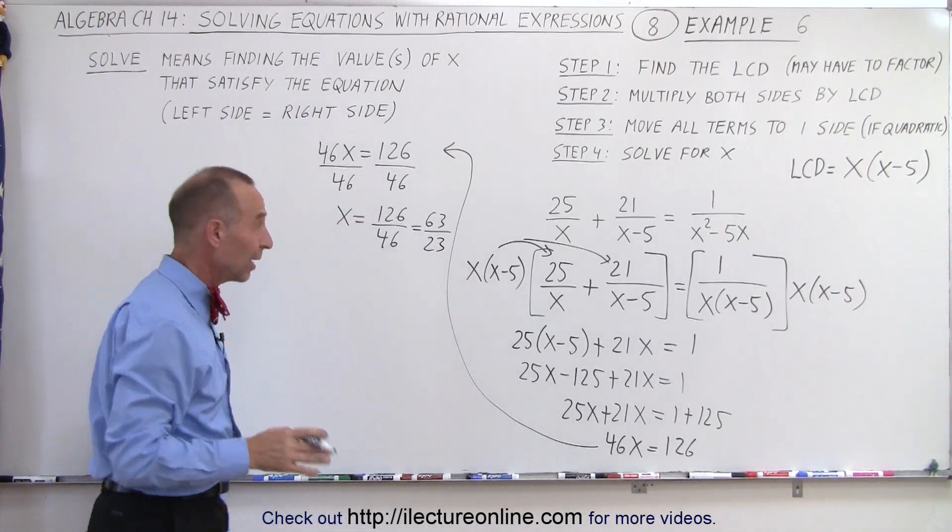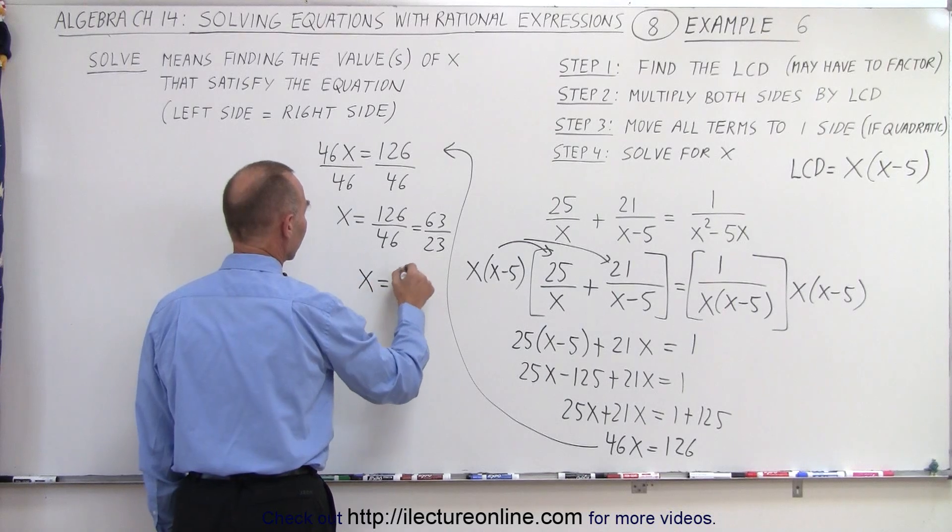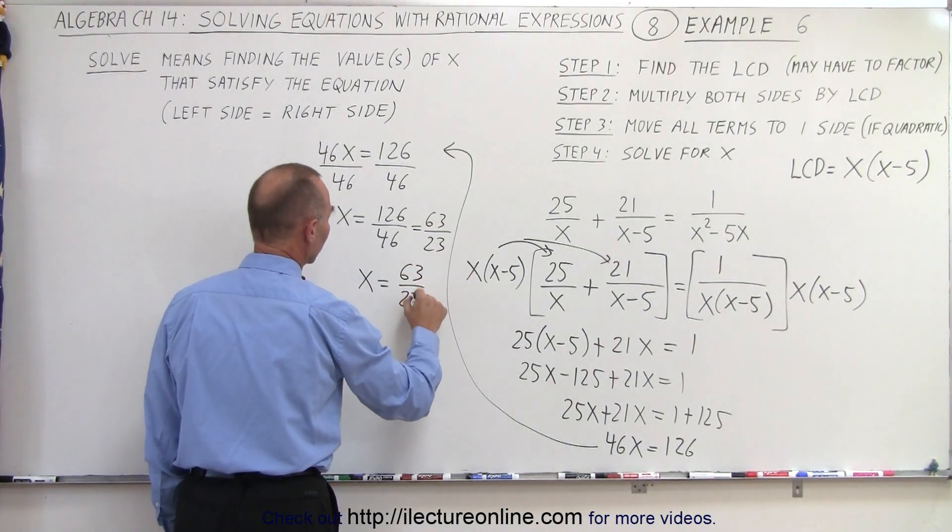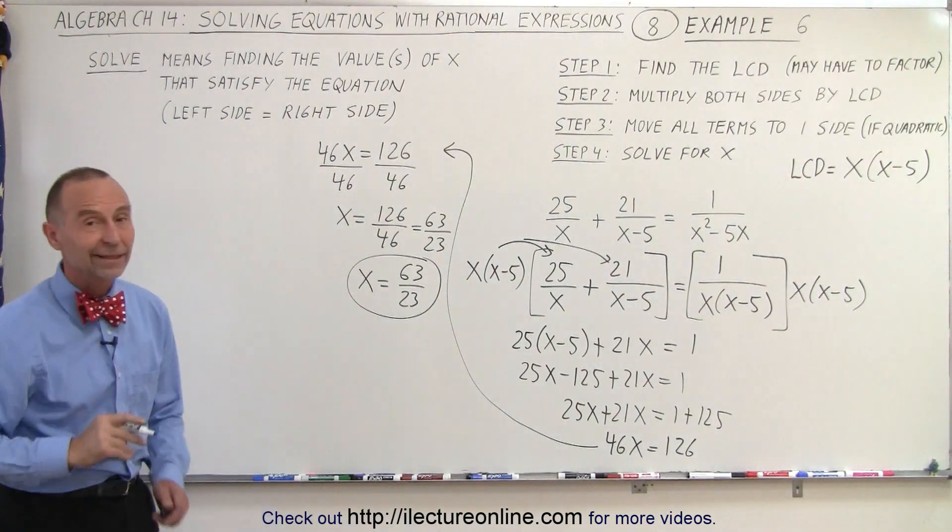Now let's see. 23 looks like a prime number. And that's as far as you can go then. So x equals 63 over 23 as our final solution. And that is how it's done.